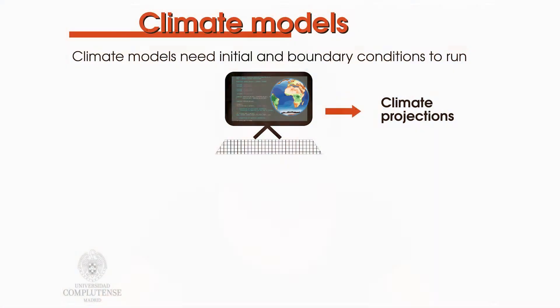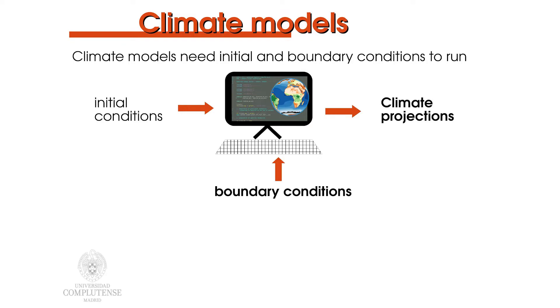To run, models need two main inputs. On the one hand, as the climate model's main task is to simulate the evolution of climate variables, they need a starting point. This is a description of the climate system — all variables in all grid cells at the initial time. On the other hand, the climate system is not isolated.